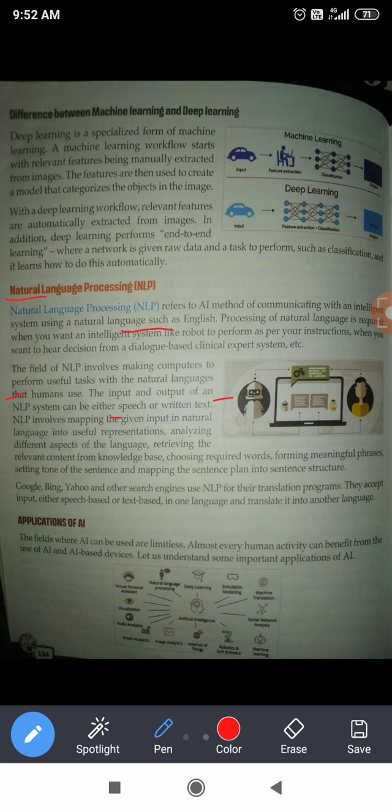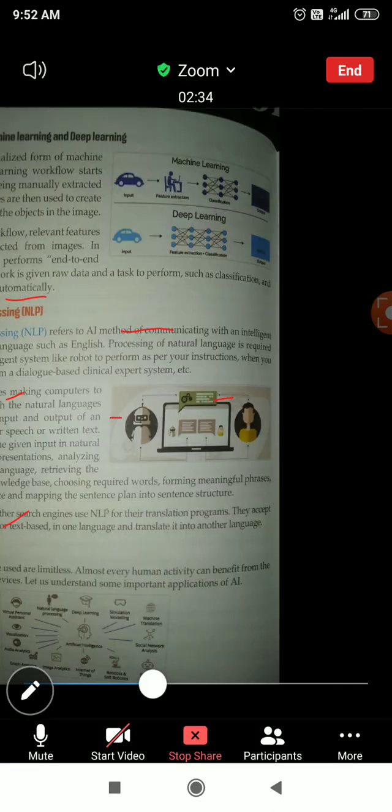It can speak, it can write, it can comprehend the proper language which can be understood by human beings. Artificial Intelligence is nowadays very vast. There are so many applications — it is almost used in every field.